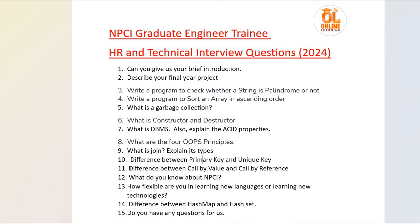The next question is the difference between call by value and call by reference. Call by value passes a copy of the variable, whereas call by reference passes the variable itself. In call by value, actual and formal parameters refer to different memory locations. In call by reference, they refer to the same memory location. There is no modification to the original value in call by value, but in call by reference the original value is modified.